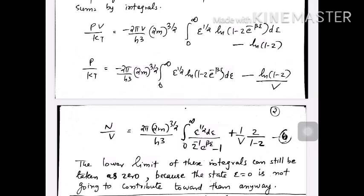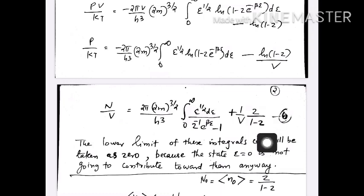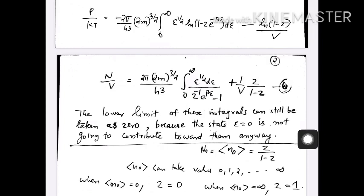We are writing the epsilon equal to 0 state separately. The term log(1 minus z) corresponds to the single particle state epsilon equal to 0, and z/(1 minus z) times 1/V represents the contribution from that single particle ground state, written separately. In these two equations we have explicitly separated the contribution from the epsilon equal to 0 state, and the reason for this was explained in the last class.